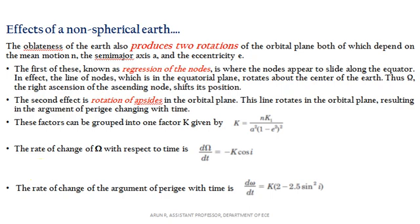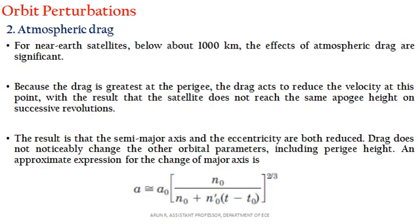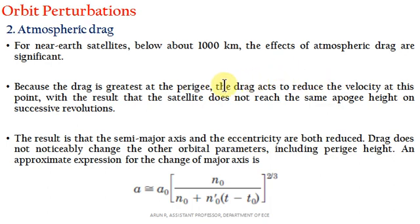Another factor affecting orbital perturbations is atmospheric drag. Drag means a pull or the effect of an external force. It mostly affects near-Earth satellites — low Earth orbit (LEO) satellites below 1000 km. The effect of atmospheric drag is significant because the drag is greatest at perigee, meaning it is highest at the nearest point. This drag can reduce the velocity of the satellite at that point.